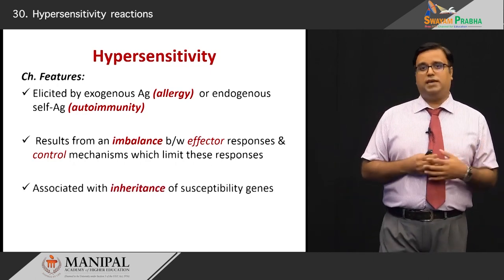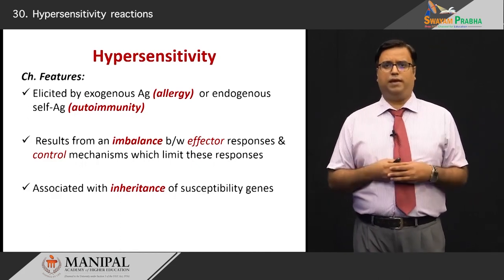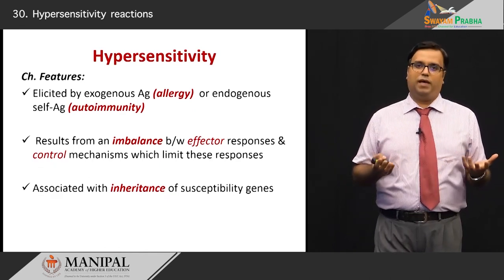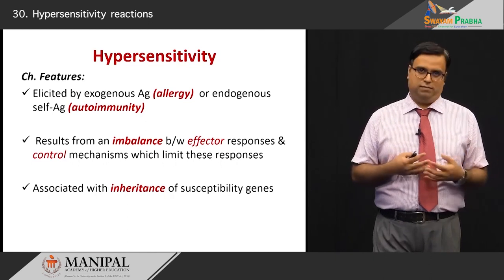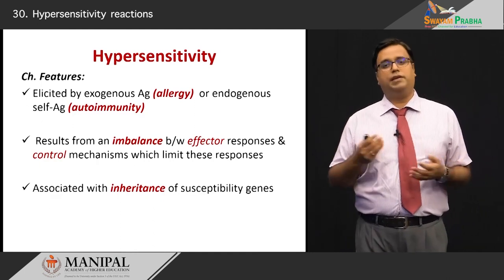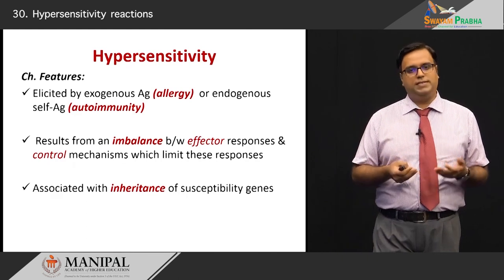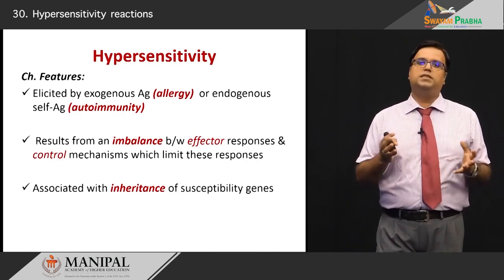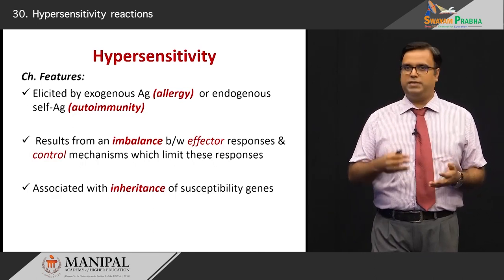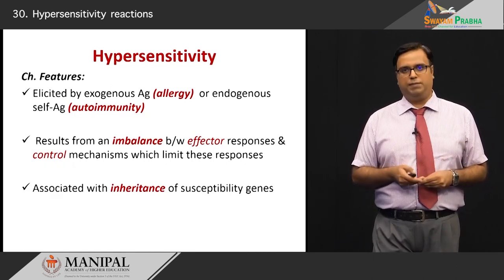Some people are more susceptible to hypersensitivity than others. For example, a person may react to peanut butter — their vocal cords swell up, they develop hives and rashes — while others tolerate it well. This has to do intrinsically with the inheritance of susceptibility genes, in the parlance of HLA or major histocompatibility complex.